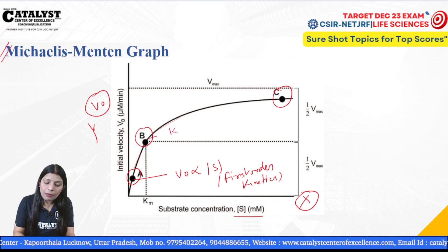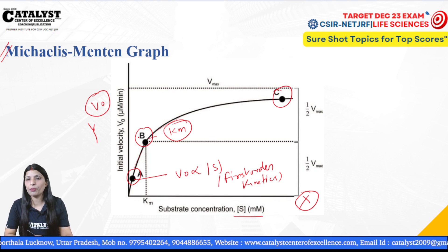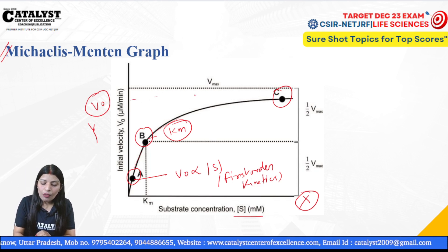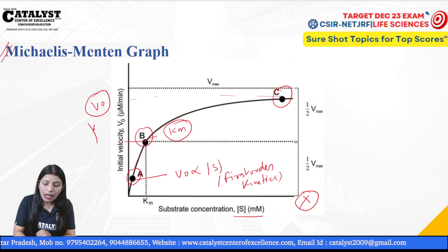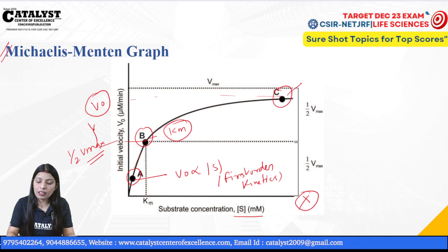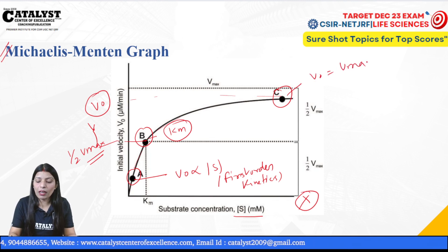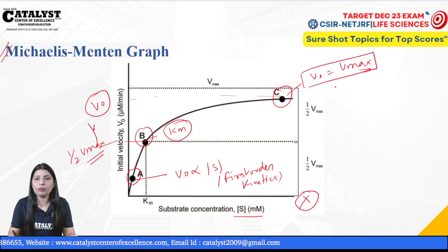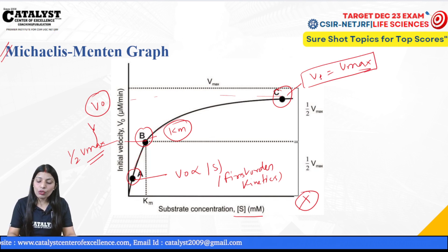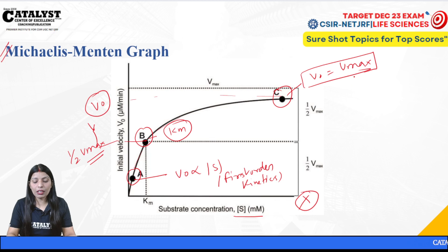Point B is the Km point, which is the particular substrate concentration at which the velocity is approximately half of the maximum velocity — we get half Vmax here. For point C, the substrate concentration is very high, so the velocity reaches the maximum velocity — V0 equals Vmax.